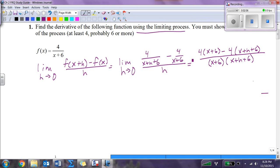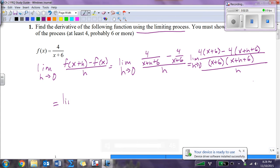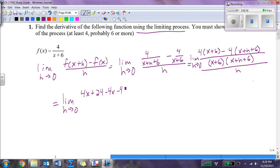I'm going to have 4 times x plus 6 minus 4 times x plus h plus 6, all over x plus 6 times x plus h plus 6. This is limit as h approaches zero. Well, we distribute the top: 4x plus 24 minus 4x minus 4h. Remember that negative has to distribute. Minus 24, all over h.